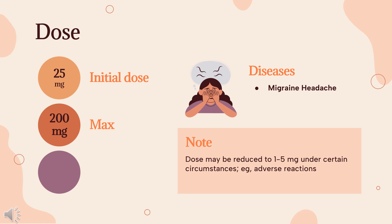Dose for migraine headache — Tablet: 25mg, 50mg, or 100mg PO, taken with fluids. Not to exceed 100mg per dose; additional doses Q2HR PRN. Recommended maximum dose: 200mg per day. See also combination with naproxen.